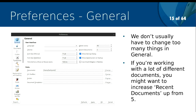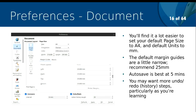We don't have to change too many things in General. If you're working with a lot of documents, you might want to increase your recent documents so you can grab them easily. If you have any accessibility issues or you're vision impaired, you may want to increase the font size of the menus or palettes. Moving on to Document: in some installations the default page size is US Letter, and you don't realise until you come to PDF it and print it and realise you have to re-lay out your document. Two minutes now will save you many swear words later. Please set your default page size to A4 and I'd recommend 25mm margins. Autosave is best set to five minutes when you're starting out.